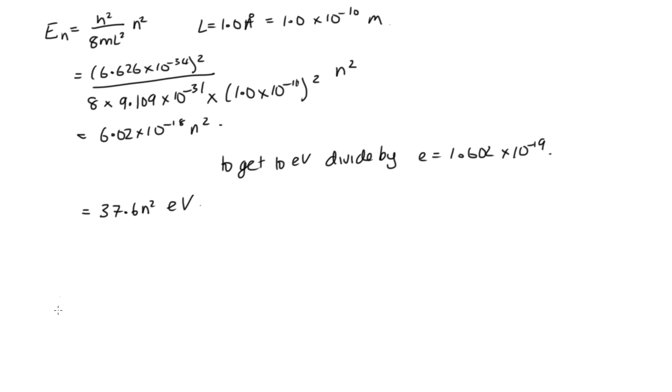Now we need to solve this for the first five levels. So we're going to be substituting in for n. So E1, that's equal to 37.6 times 1, which is equal to 37.6 electron volts. But we should just give it to two significant figures, as l is only given to two significant figures. So this is 38 electron volts.